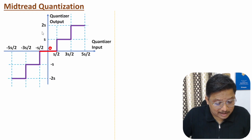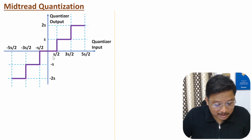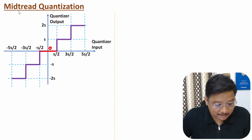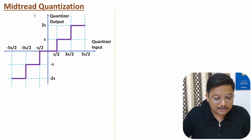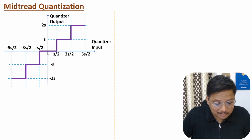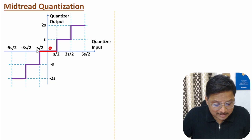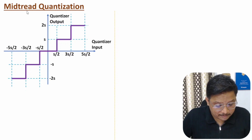Since quantizer output is 0 in between minus s/2 to plus s/2, the name of this quantization is mid-tread — meaning at the middle, at 0, our output is 0. That's why the name is mid-tread.